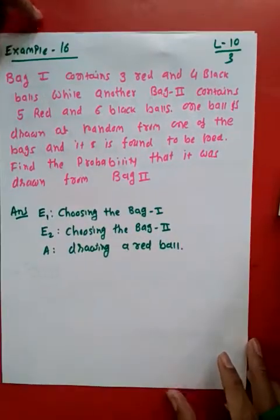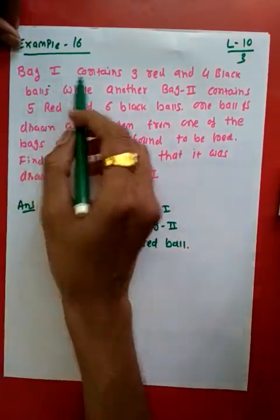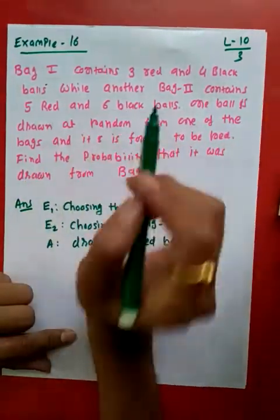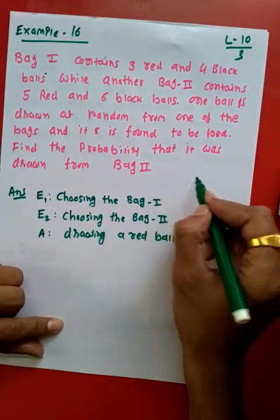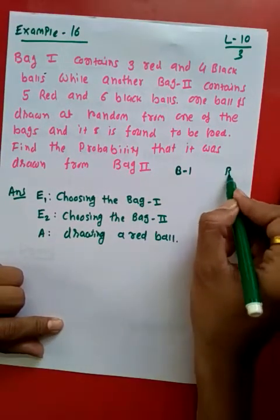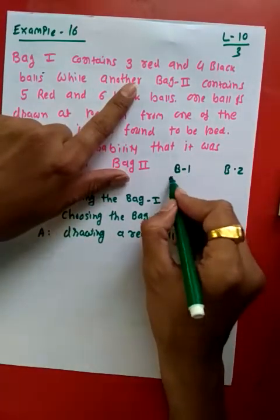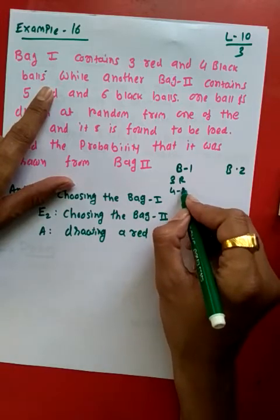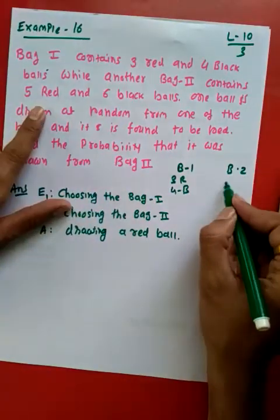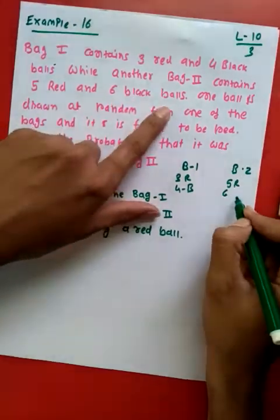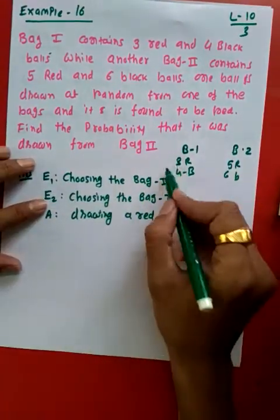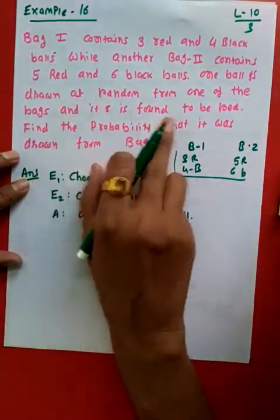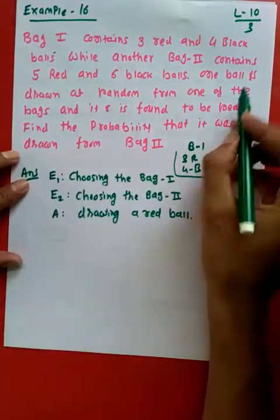Let us do example number 16. Bag 1 contains three red and four black balls, while bag 2 contains five red and six black balls. Bag 1 में three red balls and four black balls हैं, while bag 2 में five red balls and six black balls हैं.